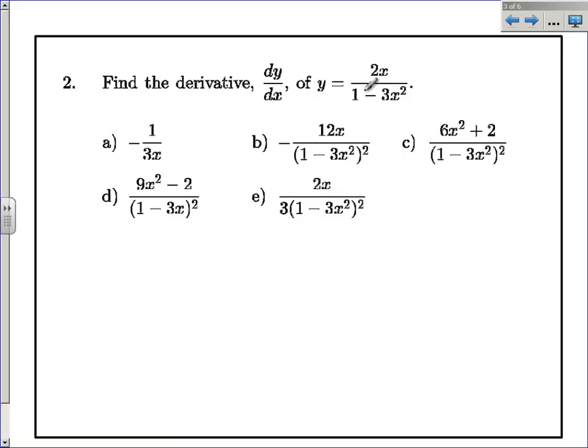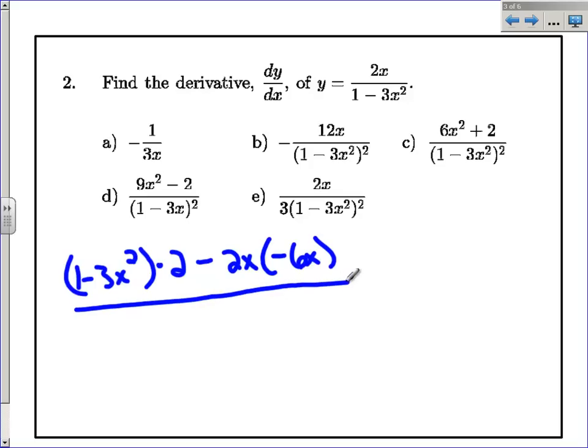The derivative is low d high, so it's the bottom function times the derivative of the top. The derivative of 2x is 2, so there's low d high, minus the top times the derivative of the bottom. And this is all over the bottom squared.